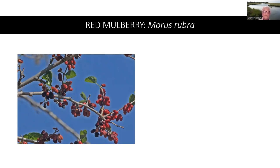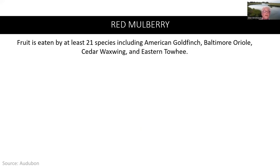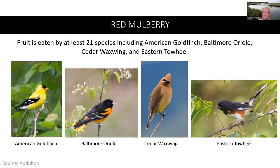The red mulberry tree typically grows 35 to 50 feet. Its fruits attract insectivorous birds, and are also used for jellies and jams, but are not commercially available due to their short shelf life. They are tolerant of drought and air pollution. The fruit of the red mulberry is eaten by at least 21 species, including the American goldfinch, Baltimore oriole, cedar waxwing, and the eastern towhee.